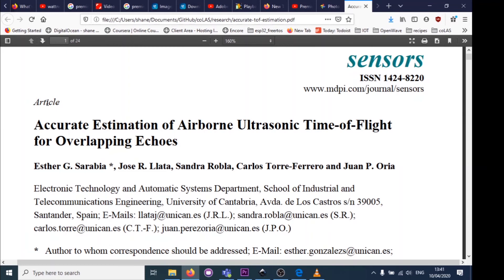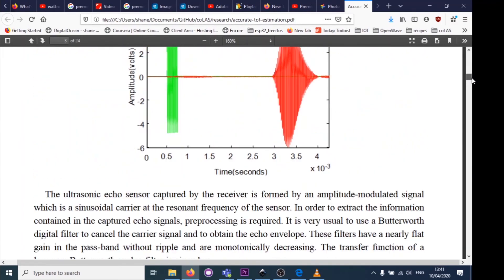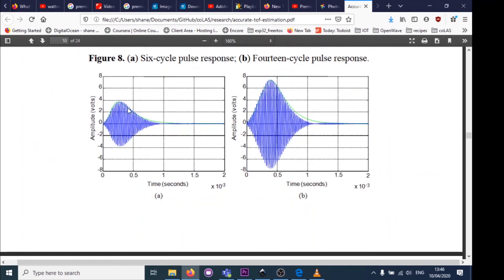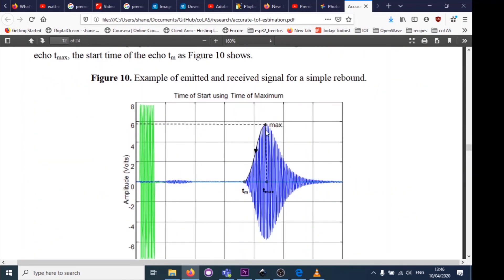I came across this paper, 'Accurate Estimation of Ultrasonic Time of Flight.' What these guys are saying is that the envelope of the signal isn't random—you can measure the time constant of this envelope and come up with an equation. All you do is measure the envelope of the receive signal with accurate timing.